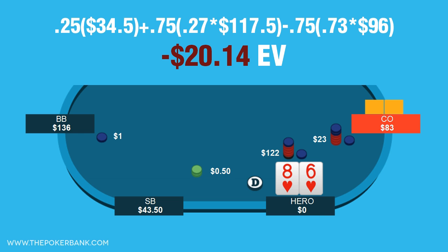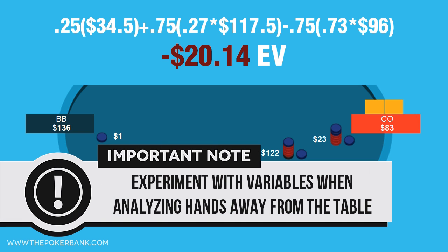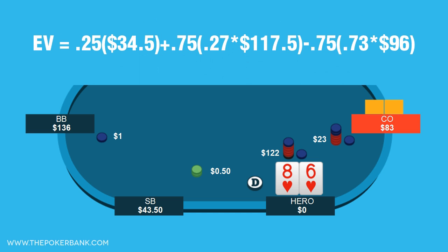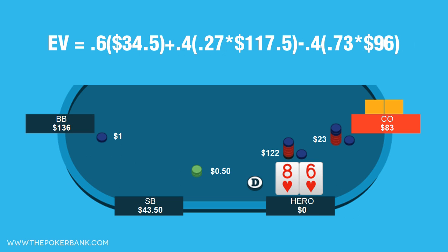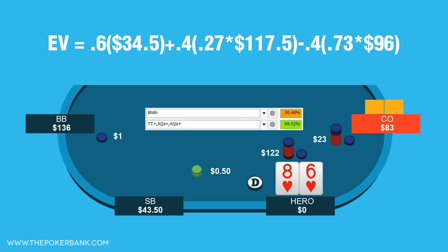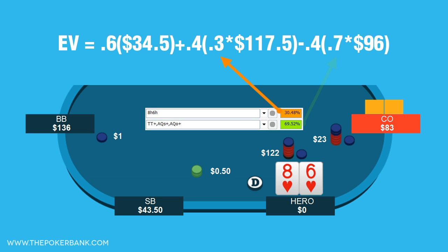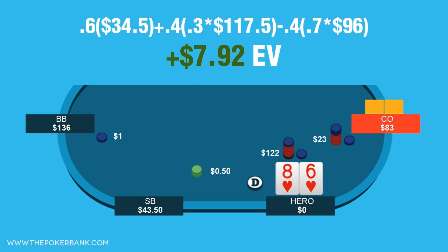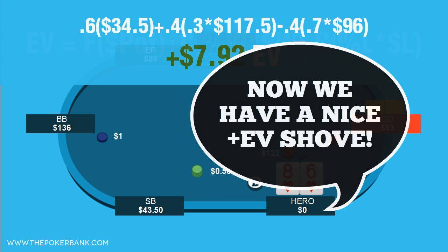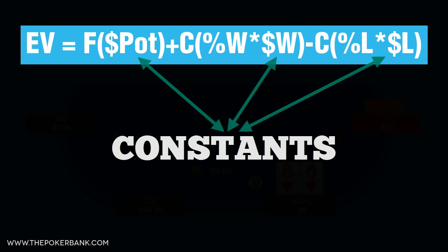Since we are analyzing this hand away from the table and have extra time, let's do some experimenting. Assume villain 4-bet bluffs a lot more often, and we can expect a fold from him 60% of the time. That changes F to 0.6 and C to 0.4. Let's also change his calling range from tens plus, ace-king to tens plus, ace-queen plus. This increases our equity up to 30%, changing both %W and %L. Now if we plug everything in, our EV jumps up to plus $7.92. All of a sudden our shove is looking pretty good. With this formula, the money won and lost will remain constant, but changes in ranges and frequencies can alter the outcome a ton.